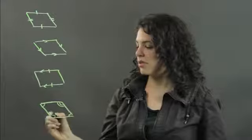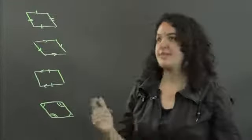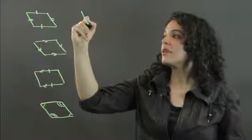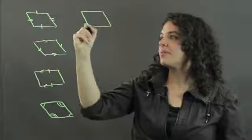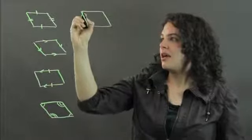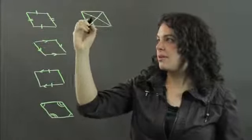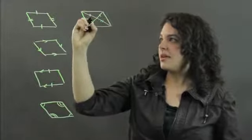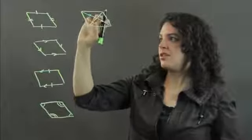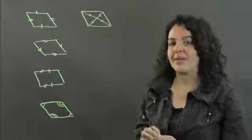And then a final test that you can use is if you have some parallelogram and the diagonals, when drawn, bisect each other, meaning they divide each other into two congruent parts, then you have a parallelogram.